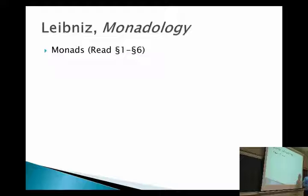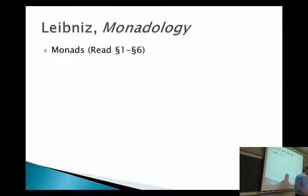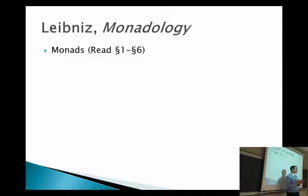What are some things we see about monads here? They're the most basic things — the basis of all things. They have no extension, so they don't have shape or figure and can't be divided up in any way. If they had extension, you could break them up into parts. So if they're most basic, they have no parts. They're not material atoms — as we just read in the New System, these are formal atoms, immaterial atoms. Monads are the most basic things in the universe — no extension, no shape or figure, can't be divided.